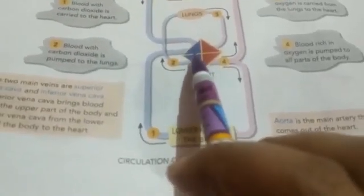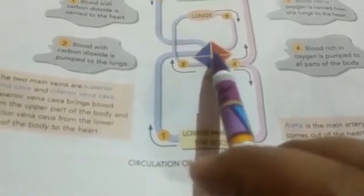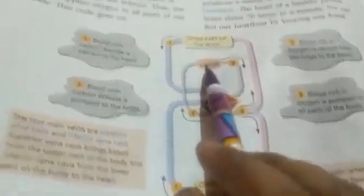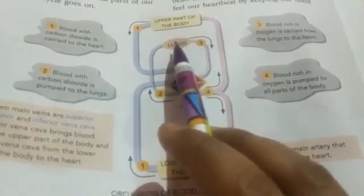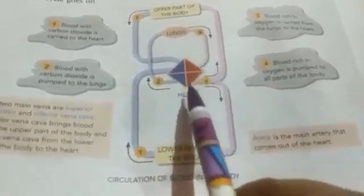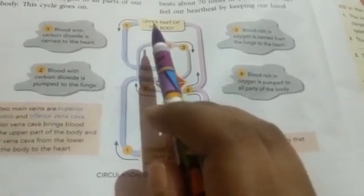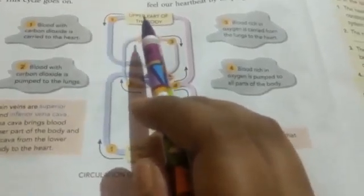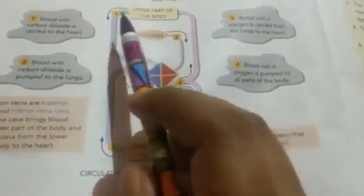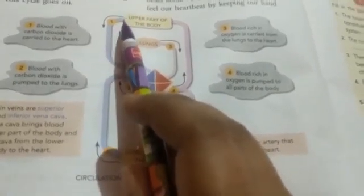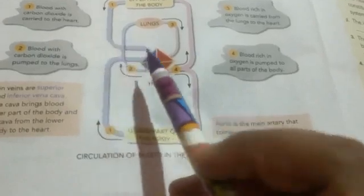The veins bring blood from the body to the heart. This blood contains waste gases like carbon dioxide. From the heart, blood goes to the lungs where exchange of gases takes place and the blood becomes rich in oxygen. This oxygenated blood is carried back to the heart, and the heart pumps it to the upper and lower parts of the body. Exchange of gases and waste materials then happens again between the capillaries and the tissues, and the capillaries connected with the veins carry the blood rich in carbon dioxide back to the heart.